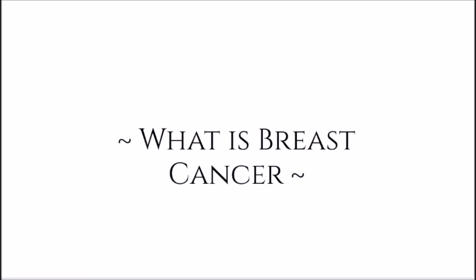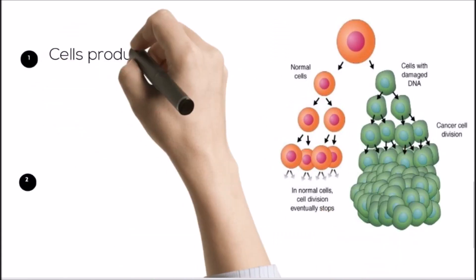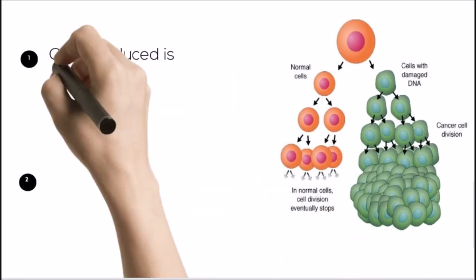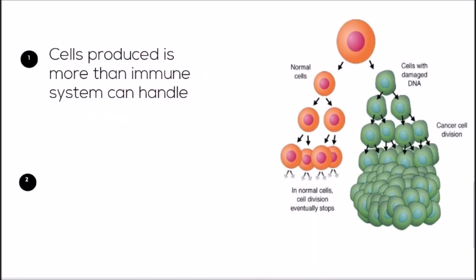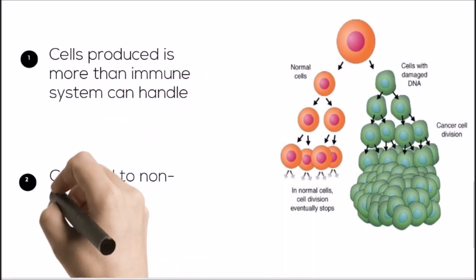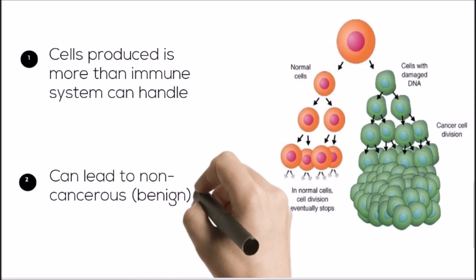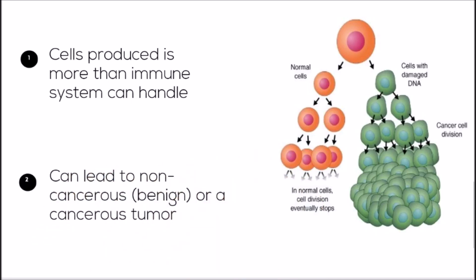Breast cancer is caused when the number of cells produced is too great for the immune system to eliminate, which causes a buildup. These changes in cell proliferation can either lead to a clump of non-cancerous benign cells, or a cancerous tumor that can form and grow, causing destruction of nearby tissue.